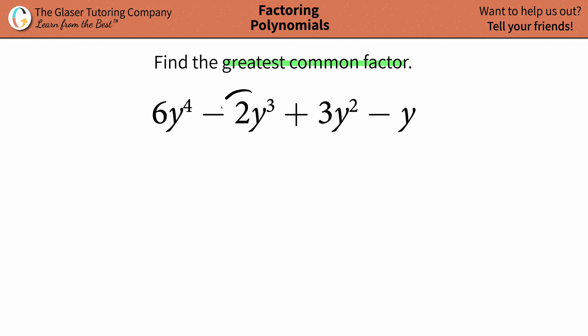Greatest common factor for lovely polynomials, and here we got a polynomial: 6y to the fourth minus 2y to the third plus 3y to the second minus y. We got four terms here. They're all different because they all have different number of y's.